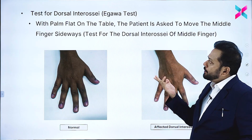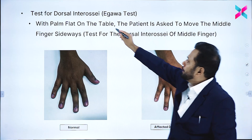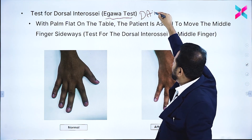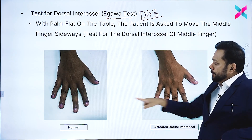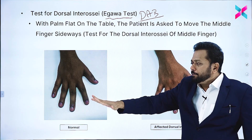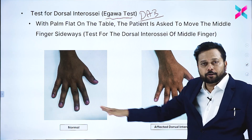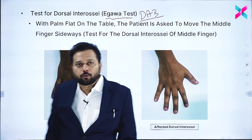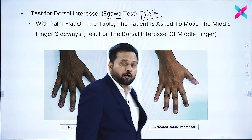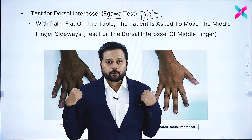For the dorsal interossei, the test is called the Egawa test. The dorsal interossei perform abduction — DAB is the mnemonic. Ask the patient to place their palm on a table and abduct the middle finger, moving it to touch the index finger and the little finger. Normally this is possible; if there is ulnar nerve injury, the patient cannot move it. This is called the Egawa test.